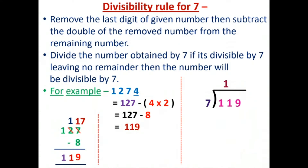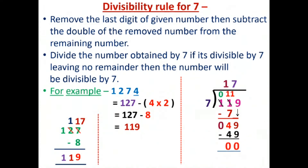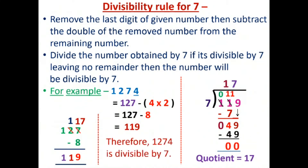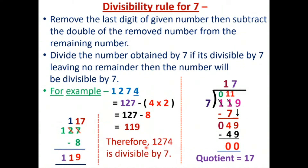Dividing 119 by 7: 7 ones are 7, but 7 will not go into 1, so 1 borrows from the next 1, making 11. Subtract 7 from 11 to get 4. Bring down 9 to get 49. 7 sevens are 49, so write 7 in the quotient and subtract to get 0. The quotient is 17 and the remainder is 0. Therefore 1274 is divisible by 7.